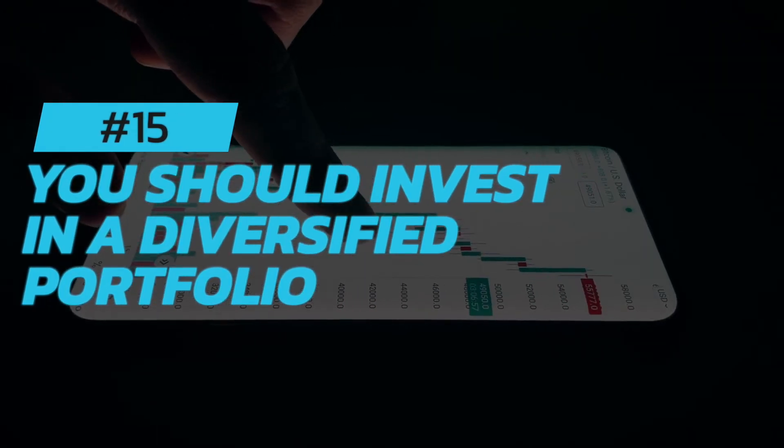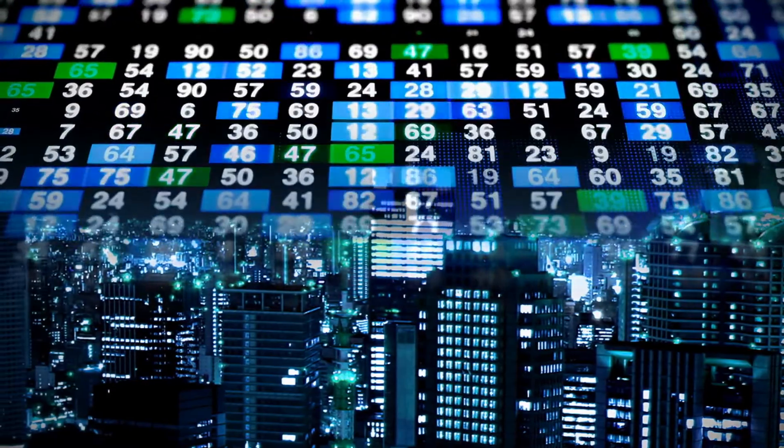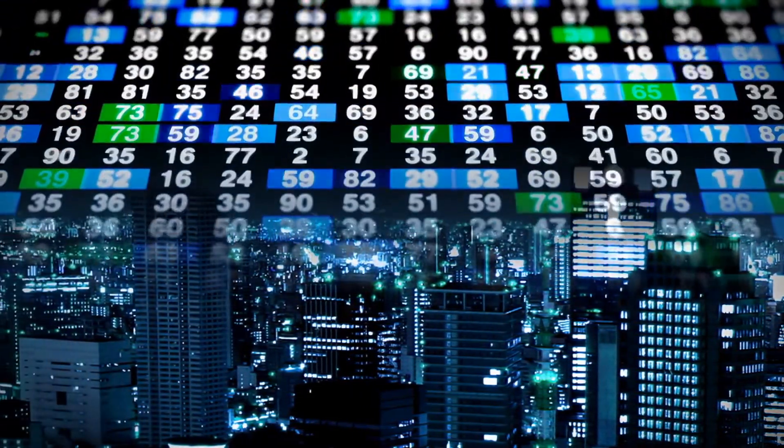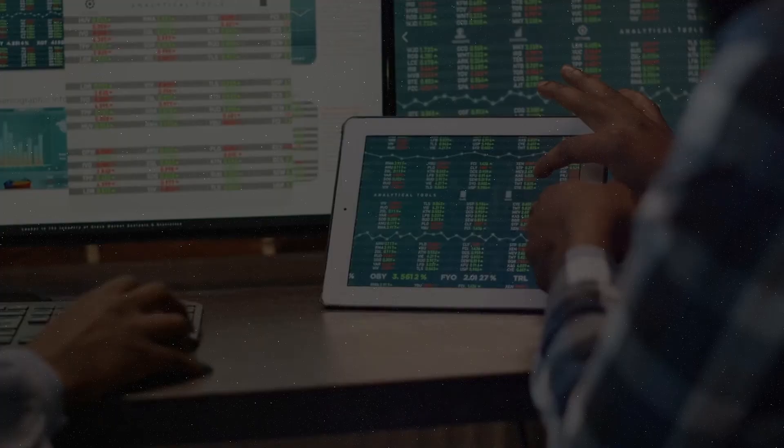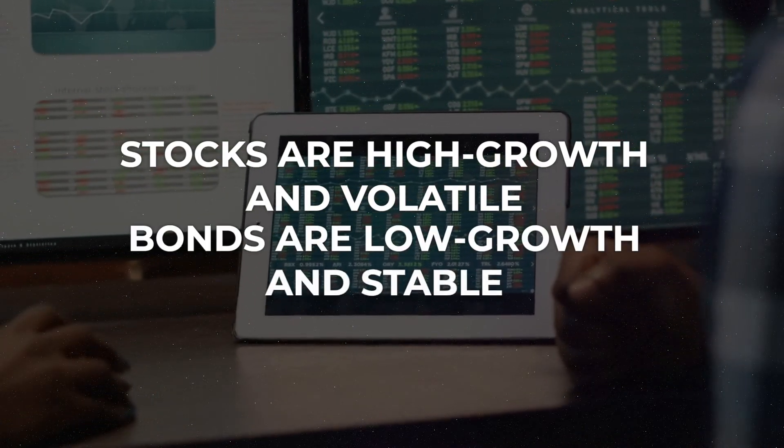Number fifteen: You should invest in a diversified portfolio. A diversified portfolio is a mix of different investments, like stocks, bonds, and real estate. This helps reduce your risk and gives you a better chance of growing your money. As a general rule of thumb, stocks are high growth and volatile, while bonds are low growth and stable.